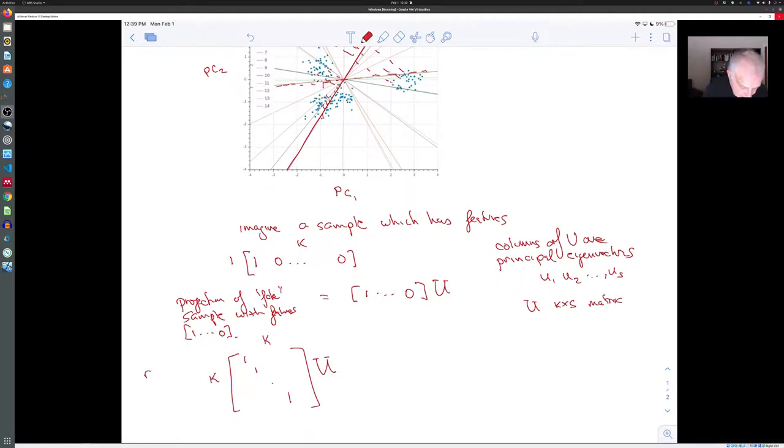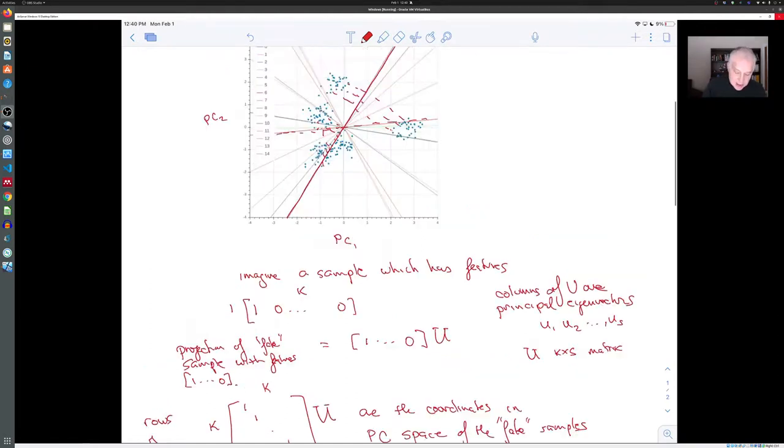And the rows of this matrix would be the coordinates in the principal component space. So in this subspace that we're working with, of the fake samples with only one feature. So what we're really doing here is we would be saying, okay, there'd be a fake point here, which is what you would get if you just had feature number one, and then you'd have a dot here. And so you'd have introduced these fake samples, each of which has a measurement one in one of the features and zero in the other.